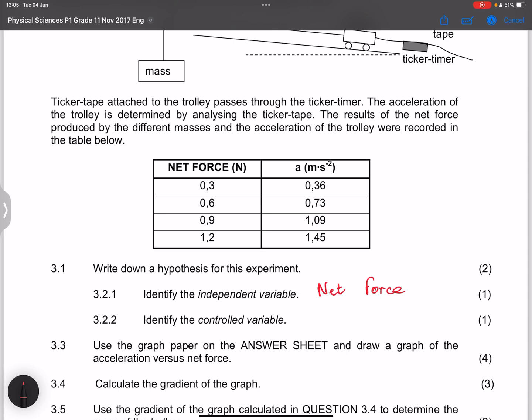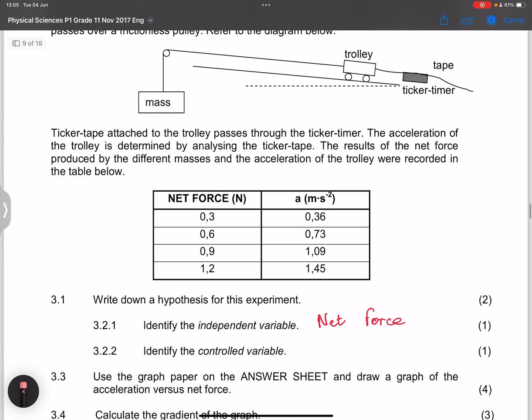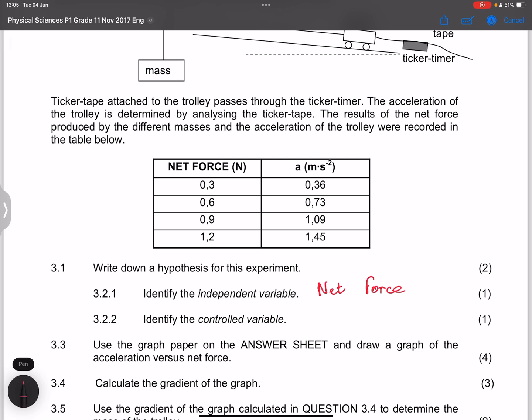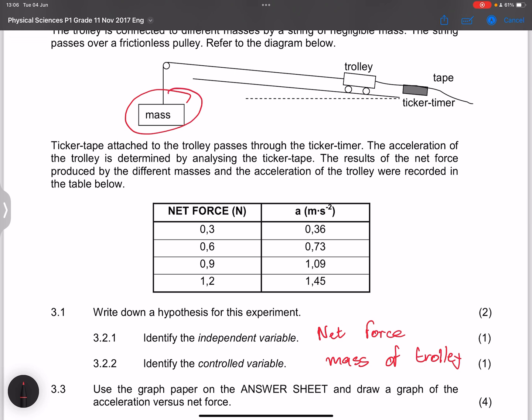And as a result, what would be our control variable? So acceleration would be the dependent variable. Remember, acceleration depends on the net force. As you keep changing net force, acceleration changes. So that would be your dependent variable. But what do we keep constant in this particular? I would say the mass of the trolley. We are changing the mass there, but that does not change the mass of the trolley. The reason we are changing this mass is so that we can have a different pulling force here, so that it affects the net force.